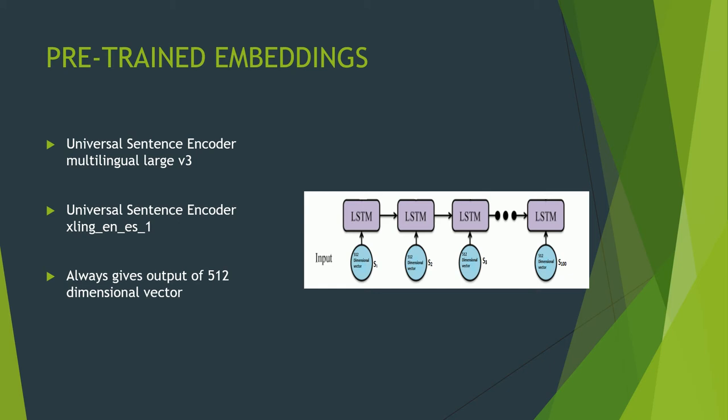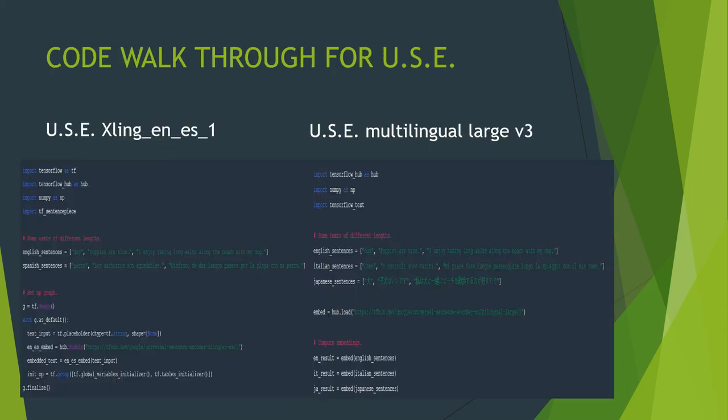We provide this 512-dimensional output as input to an LSTM unit. As seen in the right picture, the input is 100 × 512 dimensional vectors, where the 100 represents the tweets of a particular author. For the code workflow for xling-en-es, we import TensorFlow, NumPy, TensorFlow SentencePiece, then take English and Spanish sentences, import the model via hub.module with the mentioned link, and use the ns_embed function to get our output.